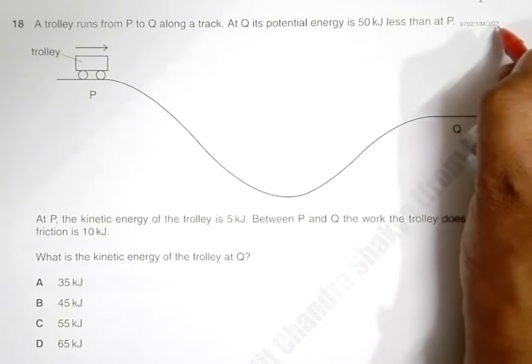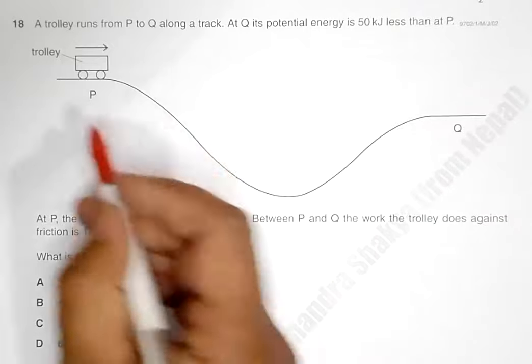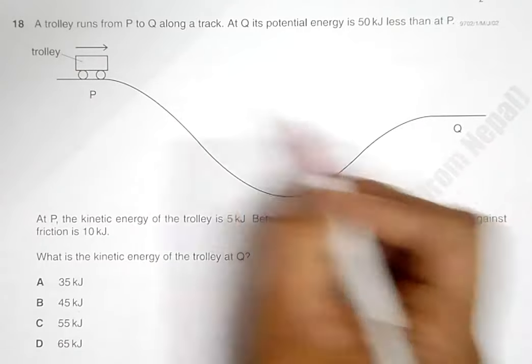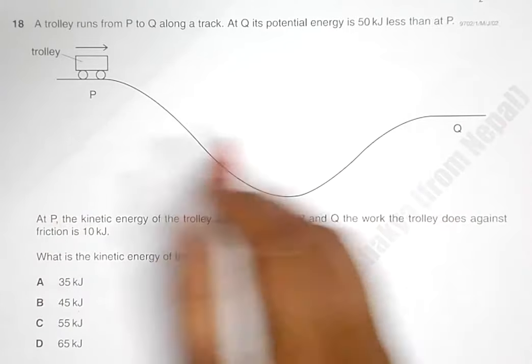The question is from 2002 major exam, question number 18. It has a trolley which goes from P to Q along a track. The track first descends and then ascends. Initially it was a plain surface and later it becomes plain and horizontal at Q.